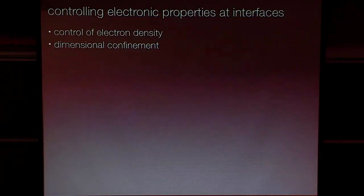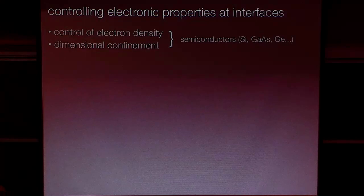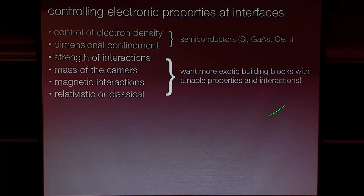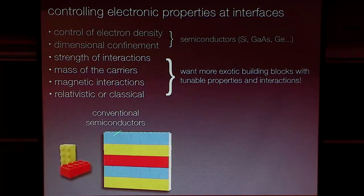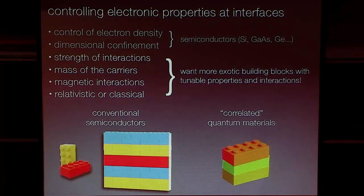People have found in conventional semiconductor systems that you could do a vast amount just by controlling the electron density and dimensional confinement in silicon and gallium arsenide — with tremendous scientific and technological impacts. What I want to argue is that with these more complex materials, you have additional knobs at your control: you can change the strength of the interaction, the mass of the carriers, or magnetic interactions. There's a great degree of more tunability to explore. Conventional semiconductors are Lego blocks, and here are Lego blocks that are correlated quantum materials. When you put another block on top, something magically appears in between — basically 1 plus 1 equals 3. You get something interesting and emergent at the interface between two correlated materials.